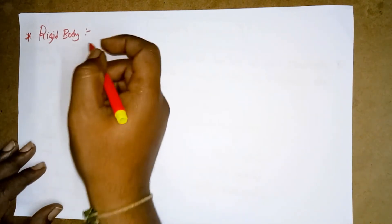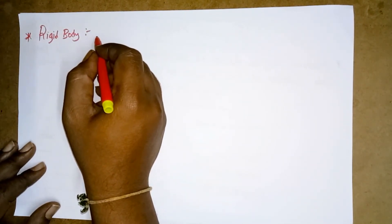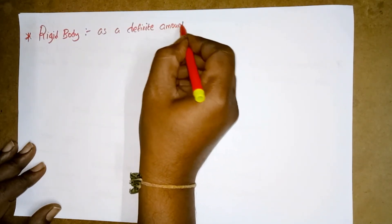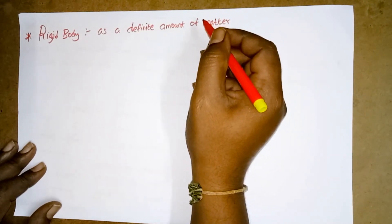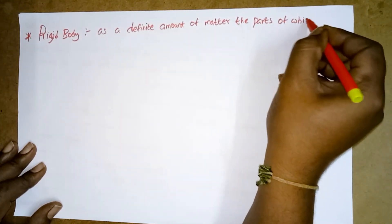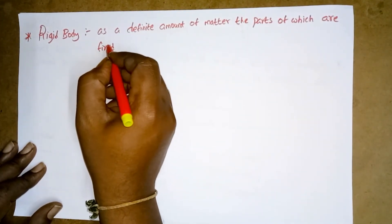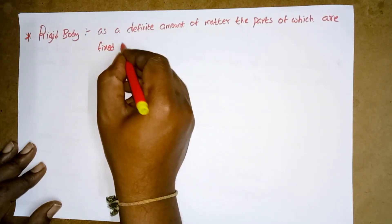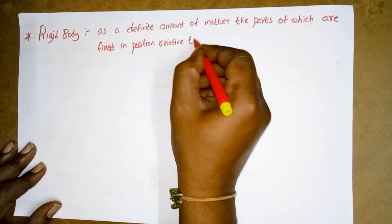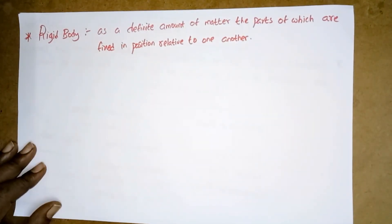Simply we can say: until and unless we apply some force, the body will not move. A rigid body is defined as a definite amount of matter, the parts of which are fixed in position relative to one another.